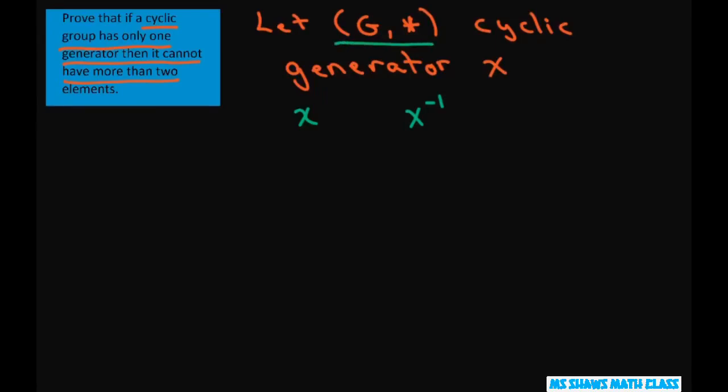then we have that X equals X inverse. Hence we have X star X equals X inverse star X. So that means this equals E, which is X star X.